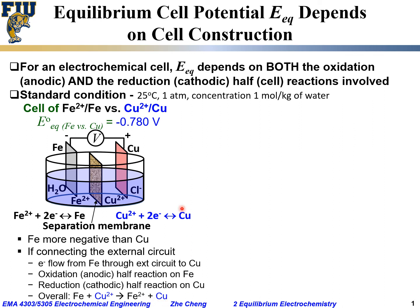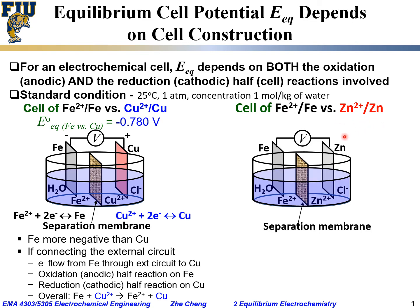In comparison, let's look at another electrochemical cell: Fe²⁺/Fe versus Zn²⁺/Zn. This is a schematic for that electrochemical cell. Similarly, iron metal and zinc metal are inserted into solutions containing iron chloride and zinc chloride.